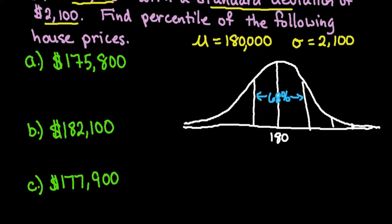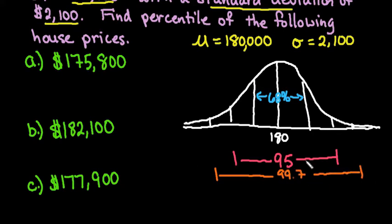We know that 95% falls between two standard deviations, and we know that 99.7% falls within three standard deviations. So it's always important to understand this information.